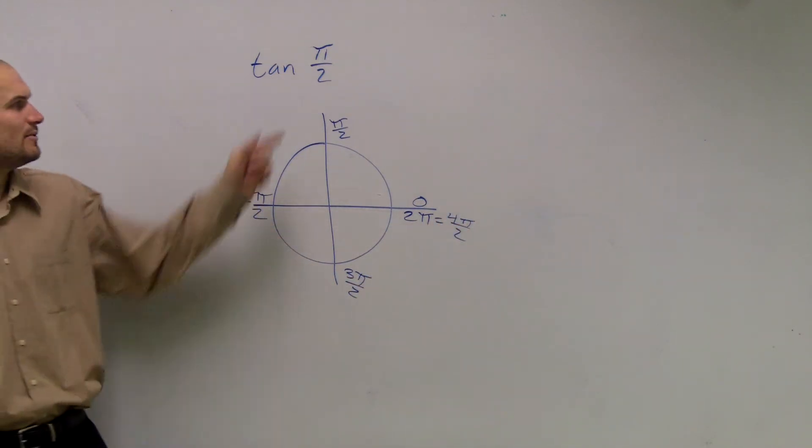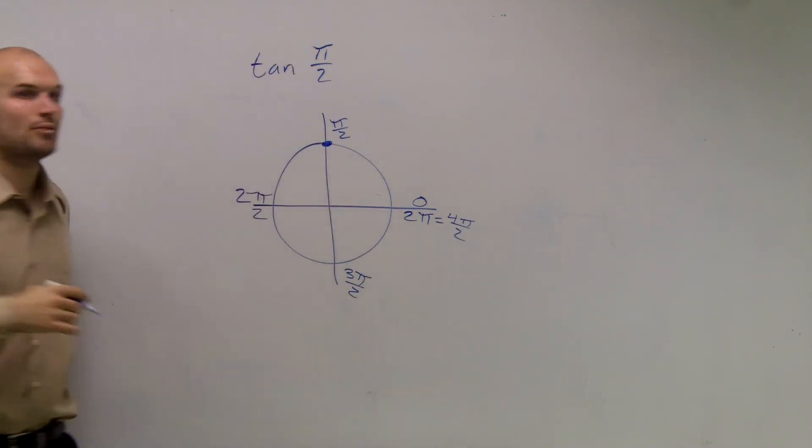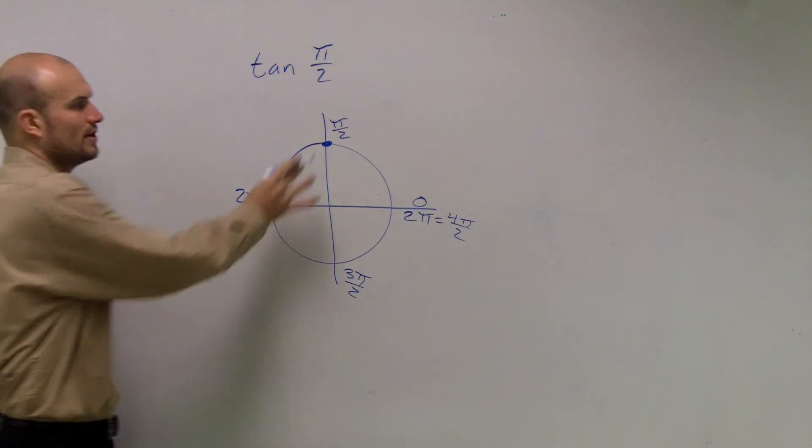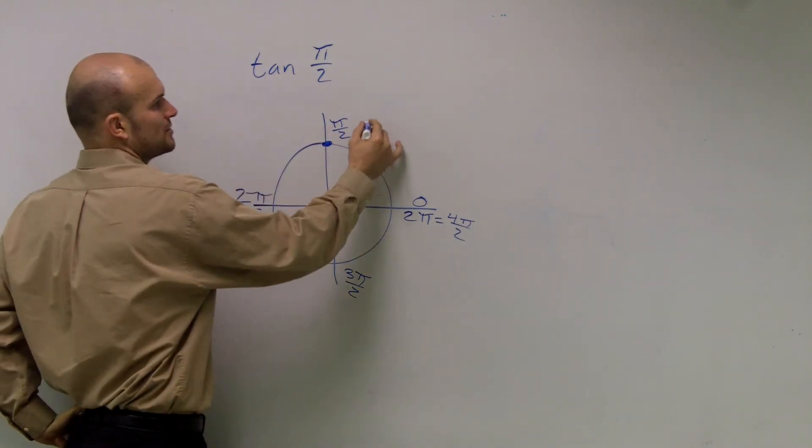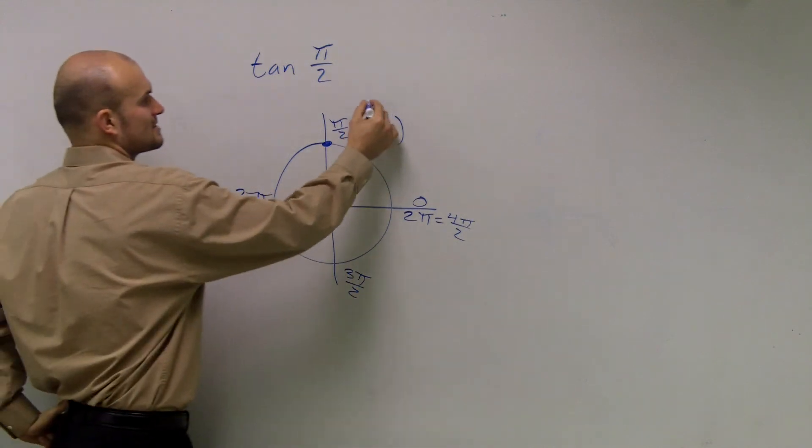So they're saying evaluate your function for tan of π over 2. Well, that's that point right there. So what is our coordinate point for π over 2? You can say it's 0 comma 1, where x and y.